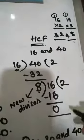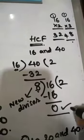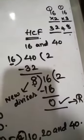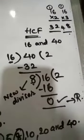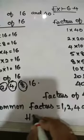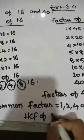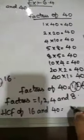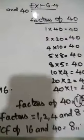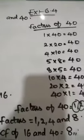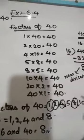We have to do this problem until we get remainder 0. HCF of 16 and 40 equals to 8. Highest Common Factor equals to 8. HCF full form is Highest Common Factor; HCF of 16 and 40 equals to 8.